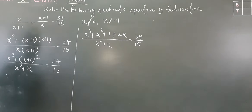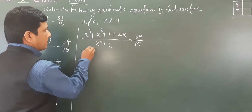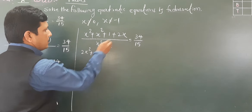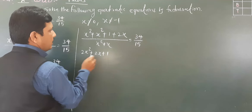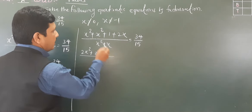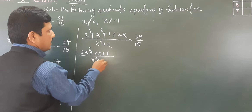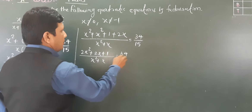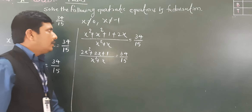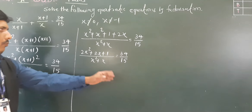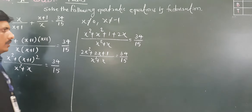So x² + x² gives 2x², and the numerator becomes 2x² + 2x + 1, divided by x² + x, equal to 34/15. Now we will do cross multiplication.